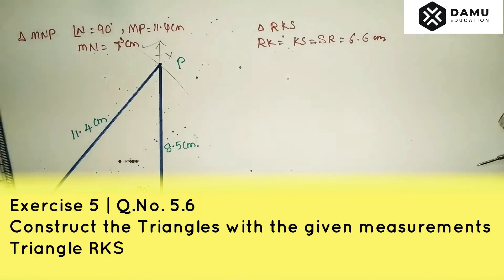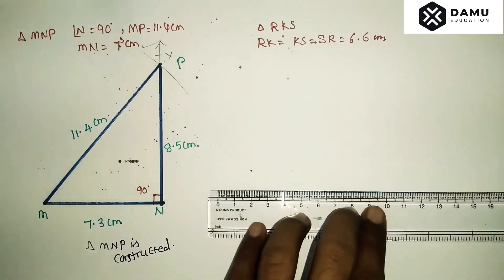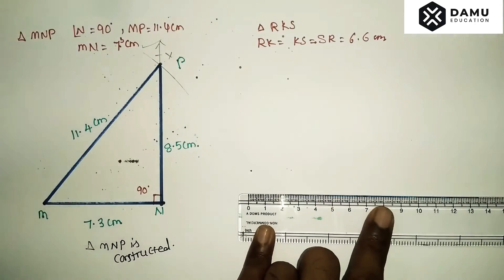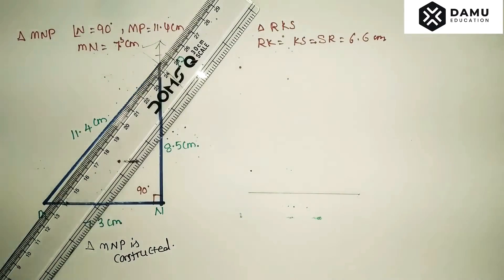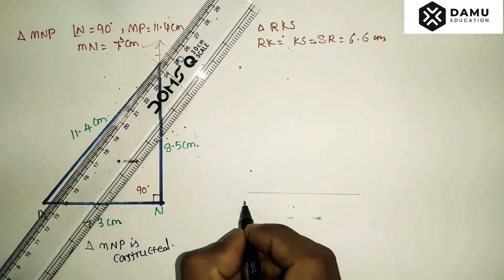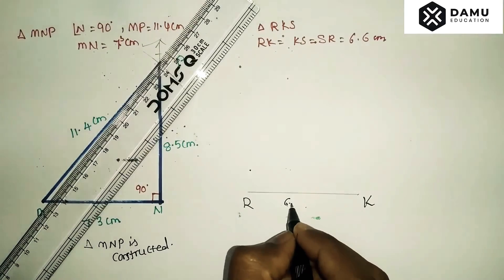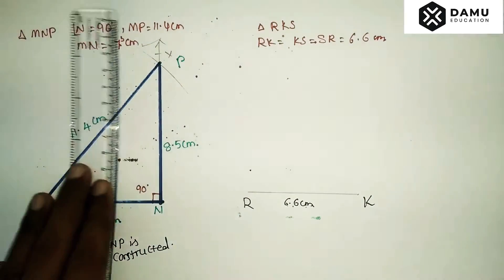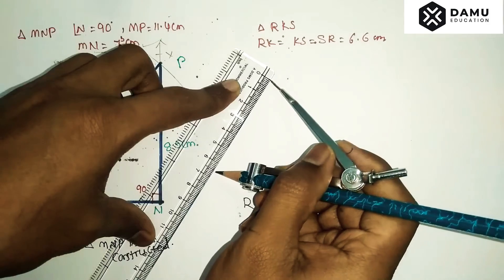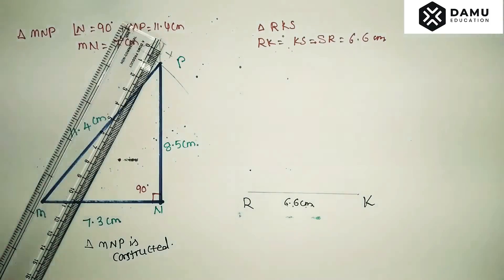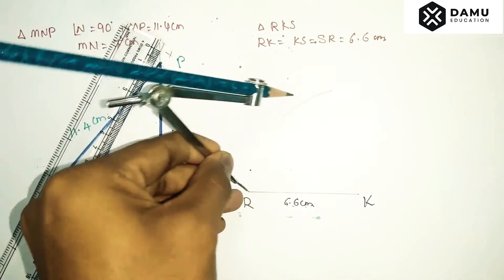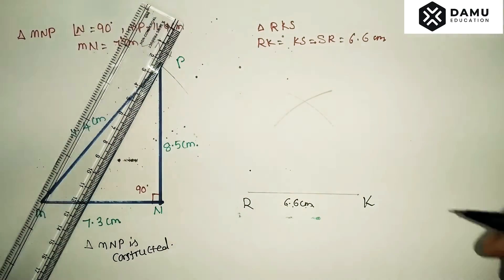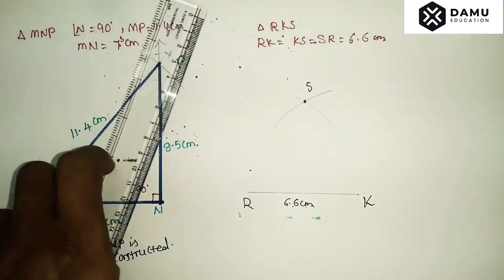The next question is triangle RKS, where all line segments are equal to 6.6 centimeters. Simply draw RK at 6.6 centimeters — from 0 to 6.6, that is one millimeter after 6.5. Take your compass and measure 6.6 centimeters. With K as center draw one arc, and with R as center draw one more arc.